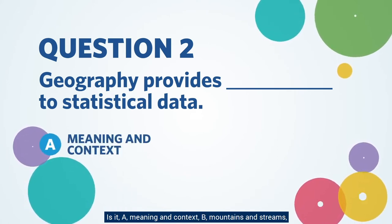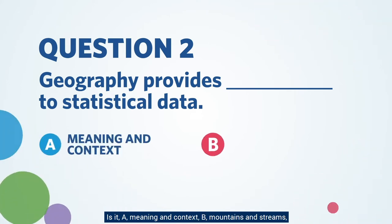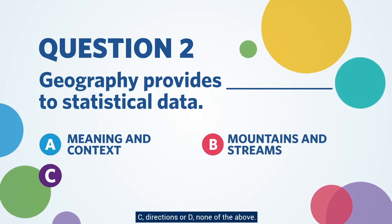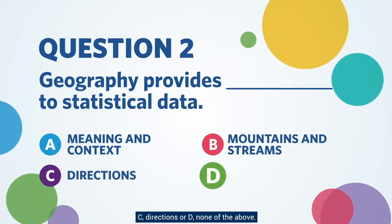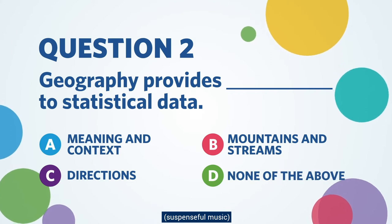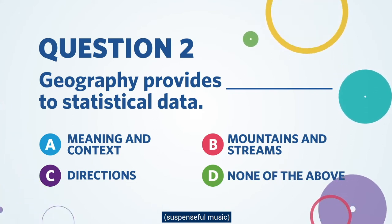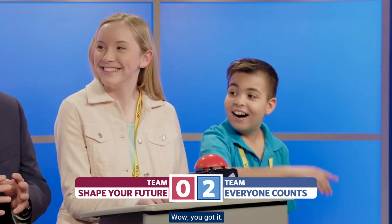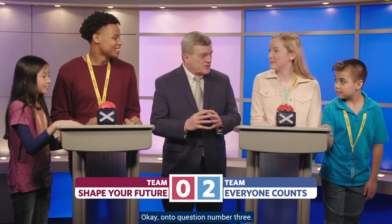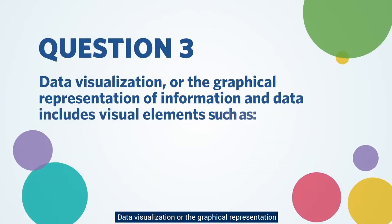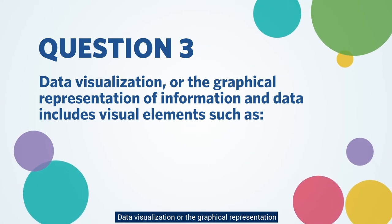Question number two: Geography provides blank to statistical data. Is it A) meaning and context, B) mountains and streams, C) directions, or D) none of the above? The answer is A — meaning and context. Wow, you got it!